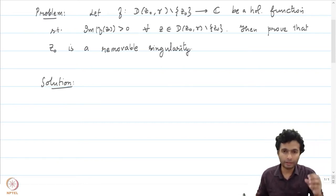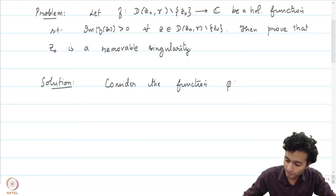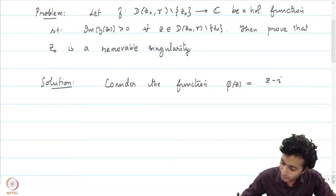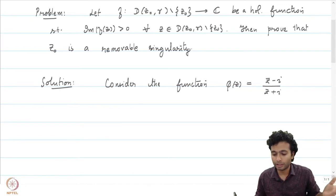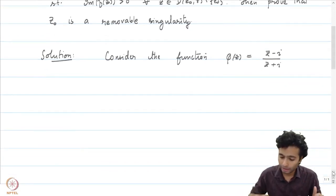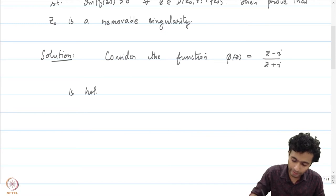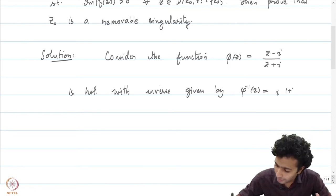Rather, what we will use is that we know there is a map from the upper half space into the unit disk. Consider the Möbius transformation φ(z) = (z − i)/(z + i). This Möbius transformation is holomorphic away from −i. In particular, in the set of all z such that the imaginary part of z is greater than 0, where −i does not belong, this function is holomorphic.